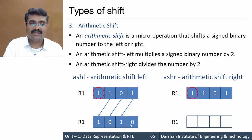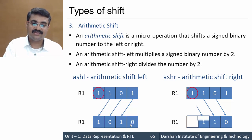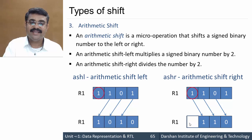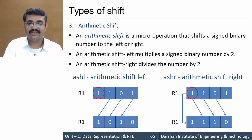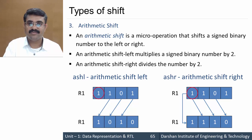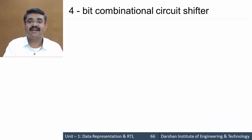The key difference arises in arithmetic shift right. The bits shift to the right, but the MSB — which represents the sign bit — is copied directly back to the MSB position rather than being replaced with zero. This preserves the sign of the number. So the difference between arithmetic shift left and right is that in arithmetic shift right, the MSB must not change.